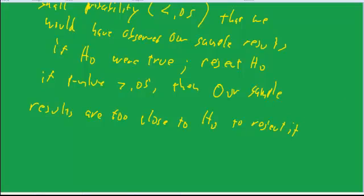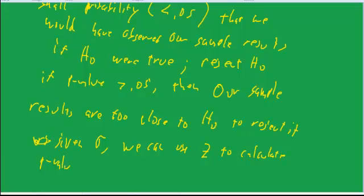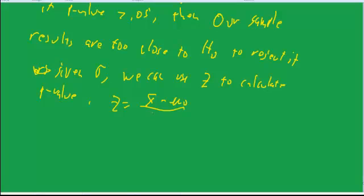So with using Z, when we're given sigma, we can use Z to calculate the p-value. That is, we take Z equals X-bar minus mu-naught, and I'll assume the alternative hypothesis is greater than, X-bar minus mu-naught over sigma over square root of N, and to get the p-value, it's just normcdf from Z to a big number.